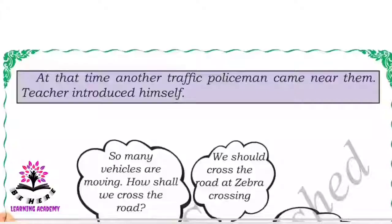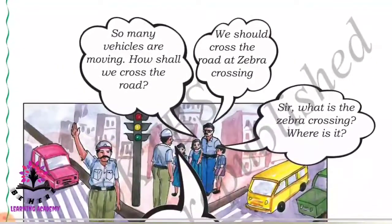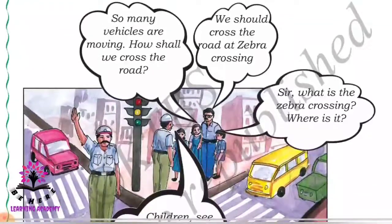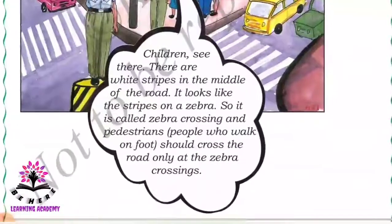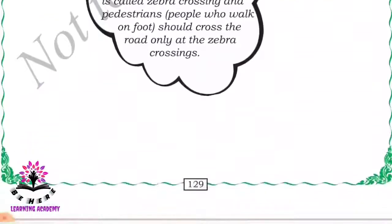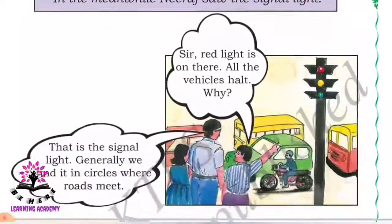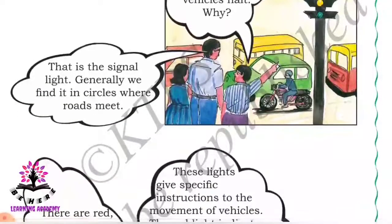So many vehicles are moving - how shall we cross the road? We should cross the road at the zebra crossing. What is the zebra crossing and where is it? Children, see there - there are white strips in the middle of the road. It looks like the strips on a zebra, so it is called zebra crossing. Pedestrians should cross the road only at the zebra crossing.